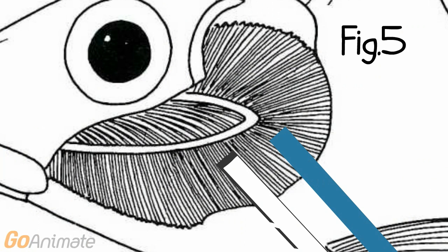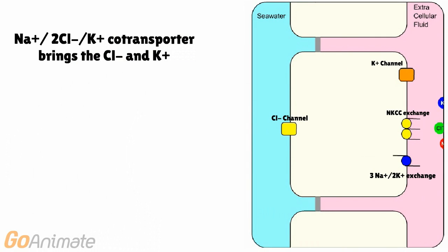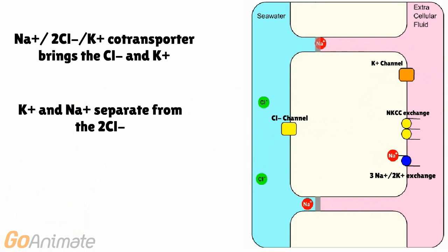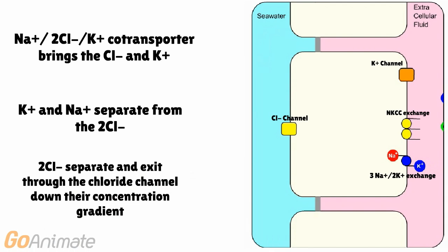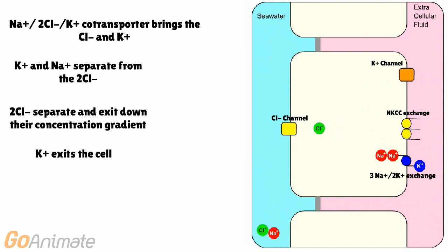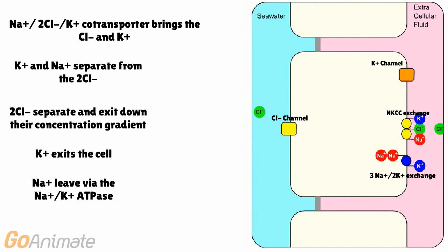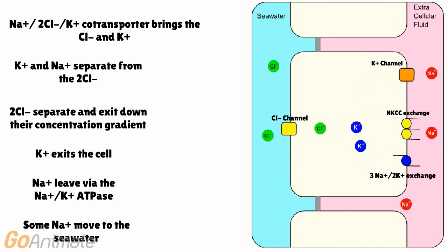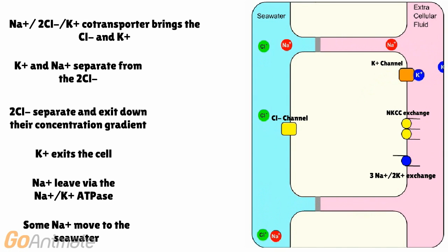Let's take a closer look at the ion exchange mechanism in the gills. The Na-2Cl-K+ co-transporter brings Cl- and K+ into the cell using the Na+ electrochemical gradient. K+ and Na+ then separate from the 2Cl-. The 2Cl- exit the cell through a chloride channel down their electrochemical gradient into the seawater. K+ exits through the K+ channel back to the extracellular fluid. The Na+ that entered via the co-transporter leaves in exchange for K+ via the Na+/K+ ATPase. Additionally, some Na+ moves to the seawater through the electrochemical gradient.